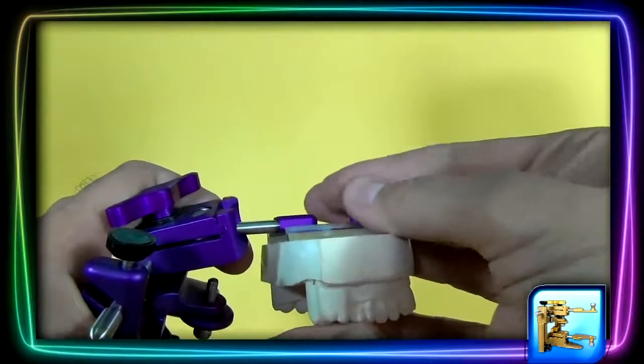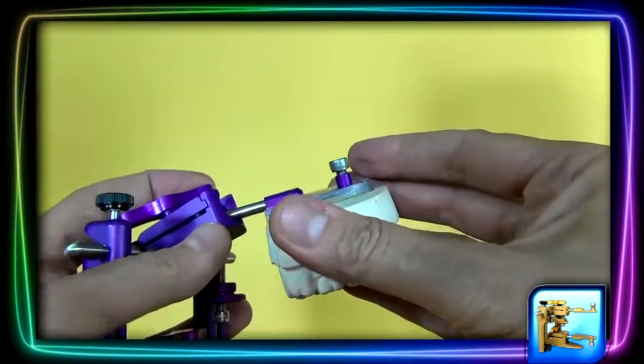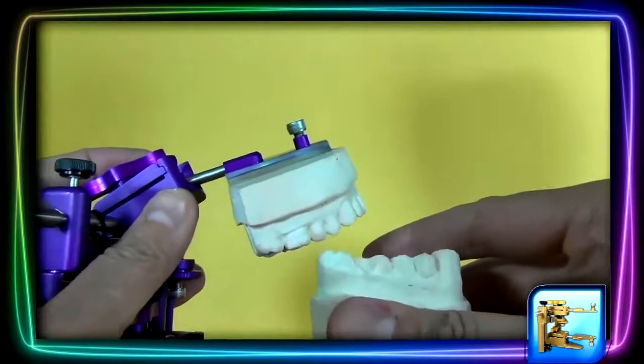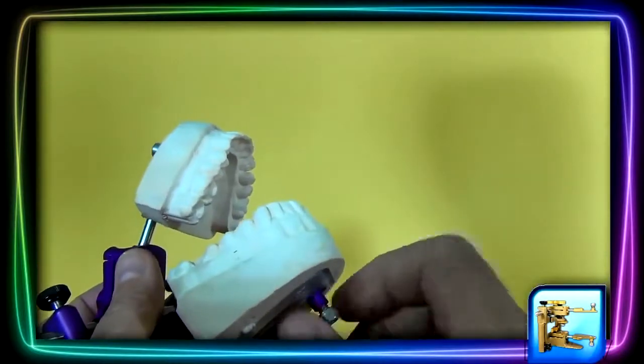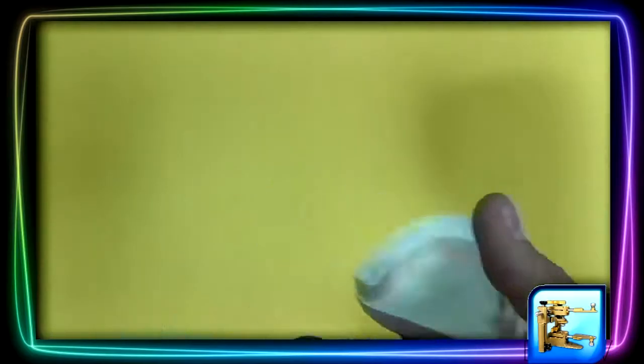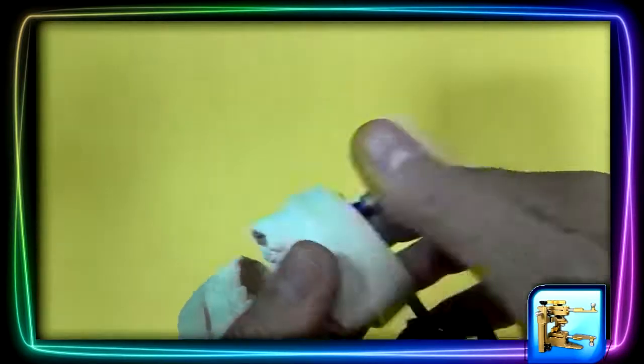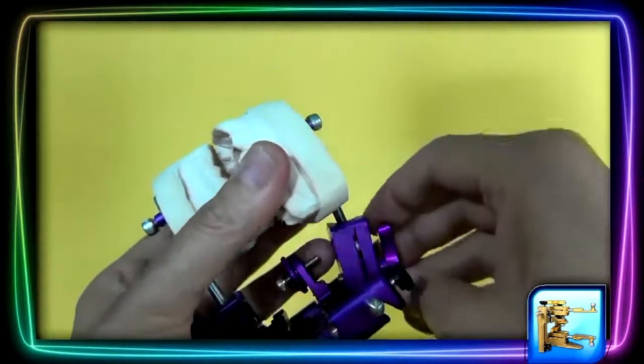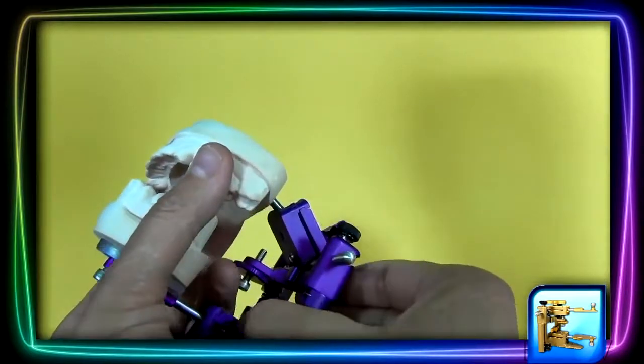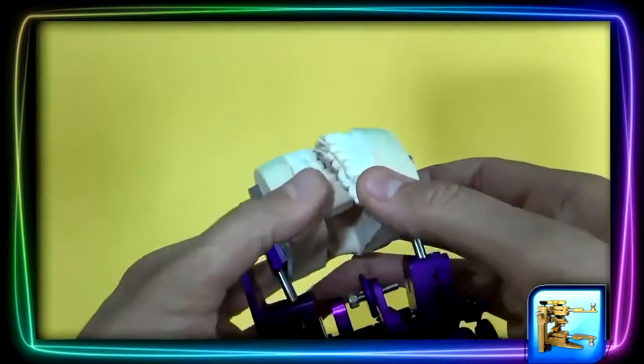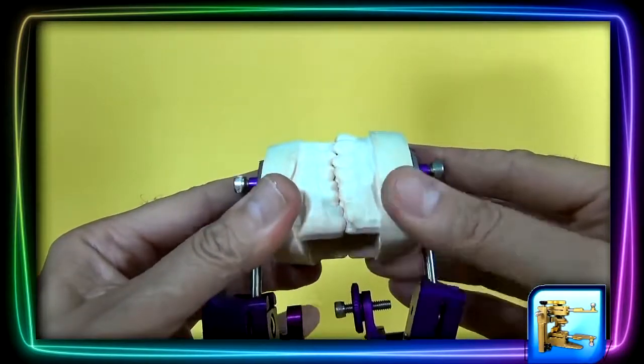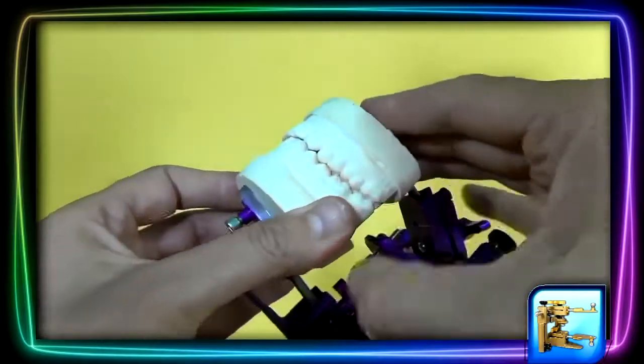And then tighten it securely. Take the lower model and do the same thing. Next, we're going to loosen all the knobs. This will make the articulator sloppy in your hands, but this will ensure that you can locate the right position without any effort, like so.